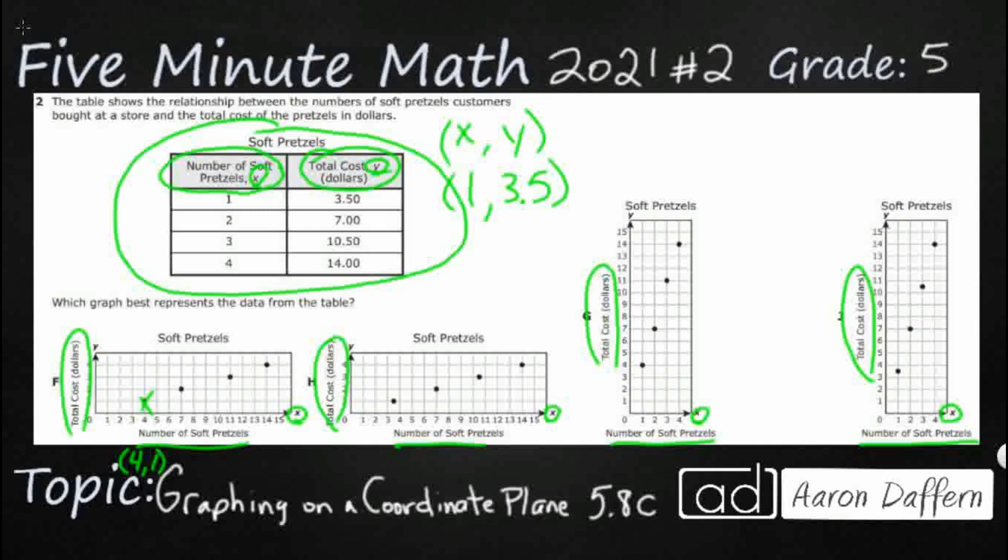H is at least a little bit better, but look, they flipped the values once again. So the x value here, there's my 3.5, which that's the total cost. The problem is they graph that on the axis that shows the number of soft pretzels. So they flipped the values. They did 3.5 comma 1. We want the 1 to come first as the x value, and the 3.5 to come second as the y value. So they flipped those values. That's why those look side to side.